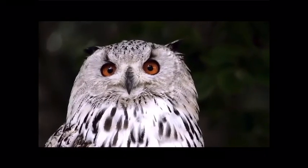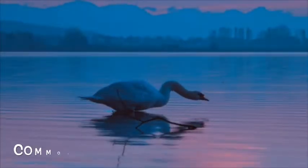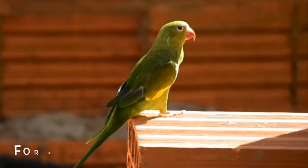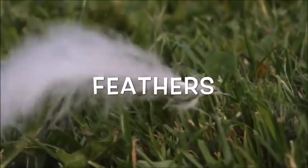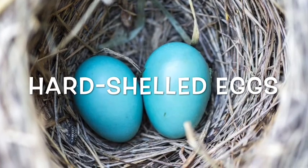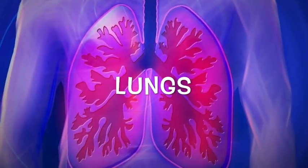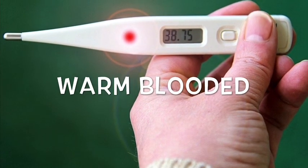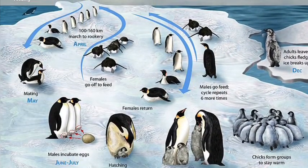Before we look at the lifecycle of a bird, we must first understand the diagnostic features of a bird. The diagnostic features are the characteristics that birds have in common. The diagnostic features of birds are: birds have feathers, birds lay hard-shelled eggs, birds breathe with lungs, and birds are warm-blooded. Now we are ready to look at the lifecycle of a bird.